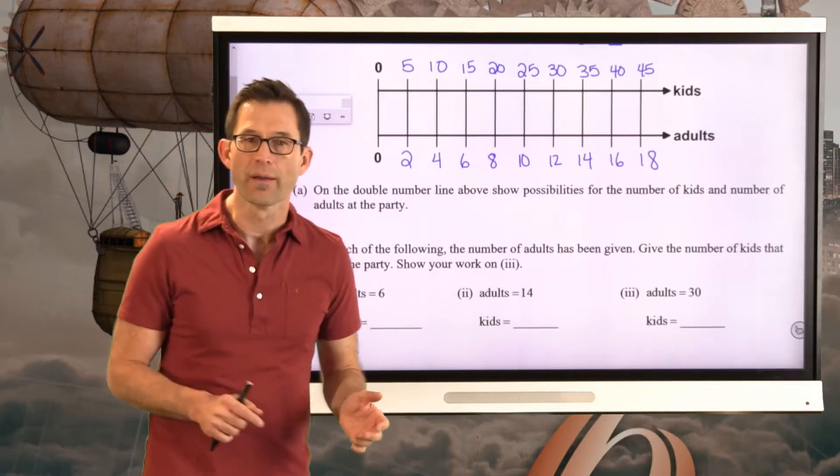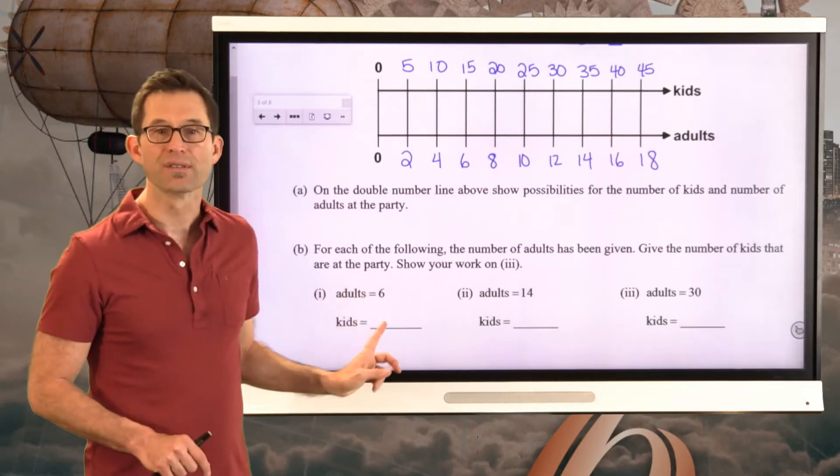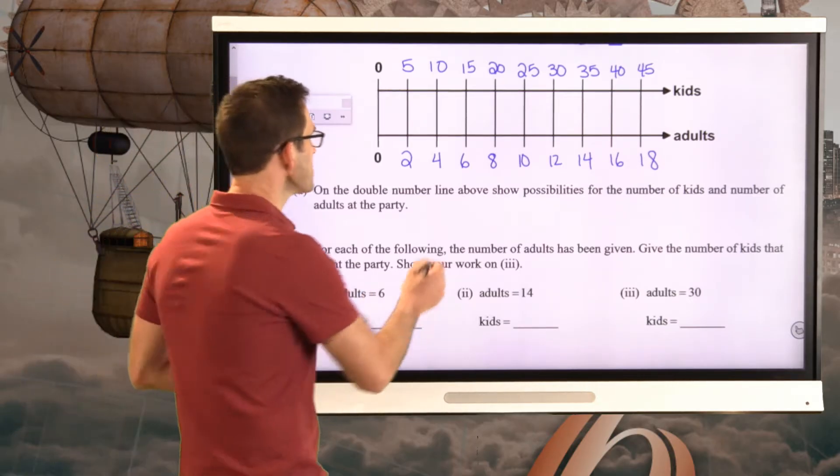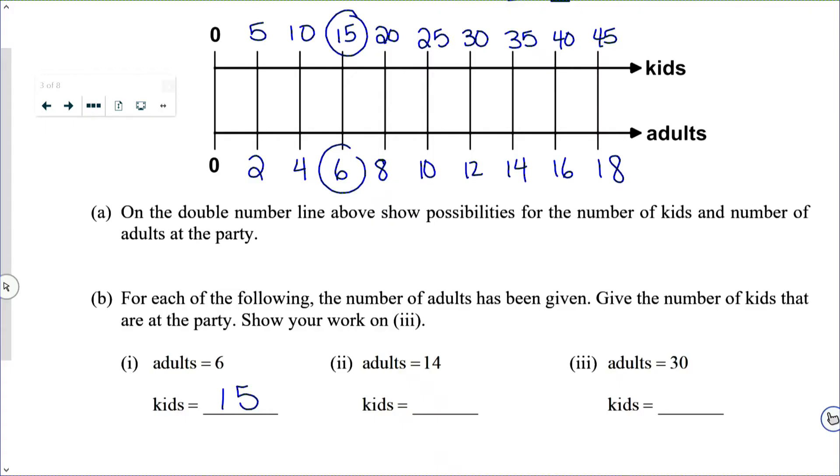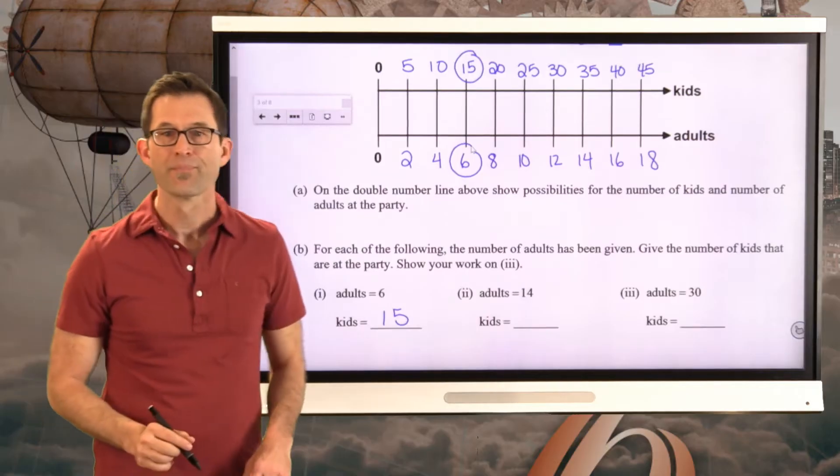So for instance, when the number of adults is 6, how many kids are there? Well, that's a piece of cake because here's 6 adults and therefore there must be 15 kids.